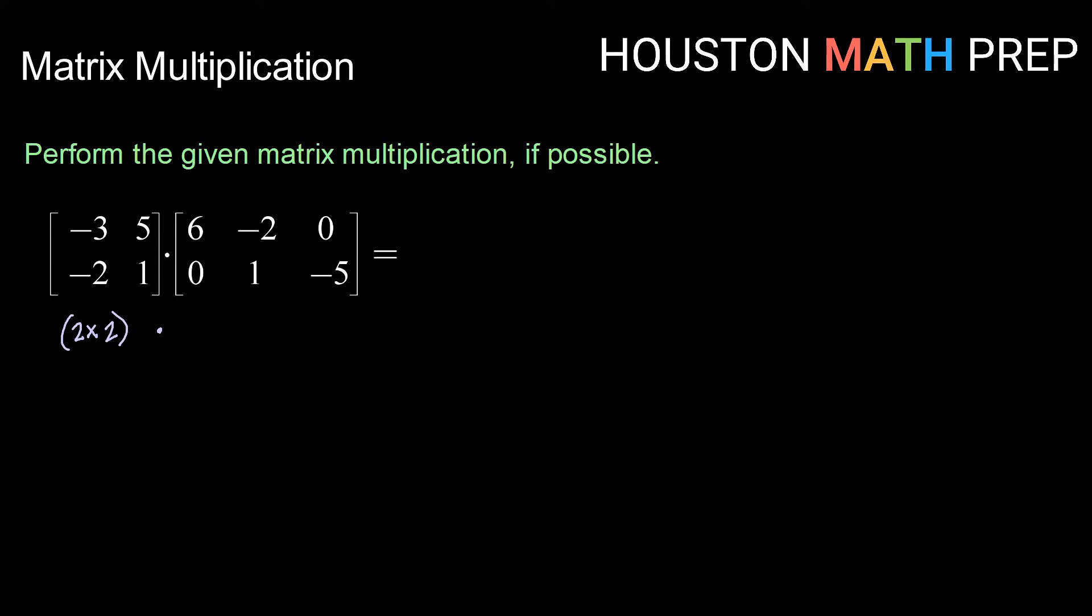We are trying to multiply that with the second matrix that has one, two rows by one, two, three columns. So we have a 2 by 3 in the second matrix. We know that we can perform matrix multiplication if these two inner dimensions match. Since we have a 2 and a 2, this matrix multiplication is possible.